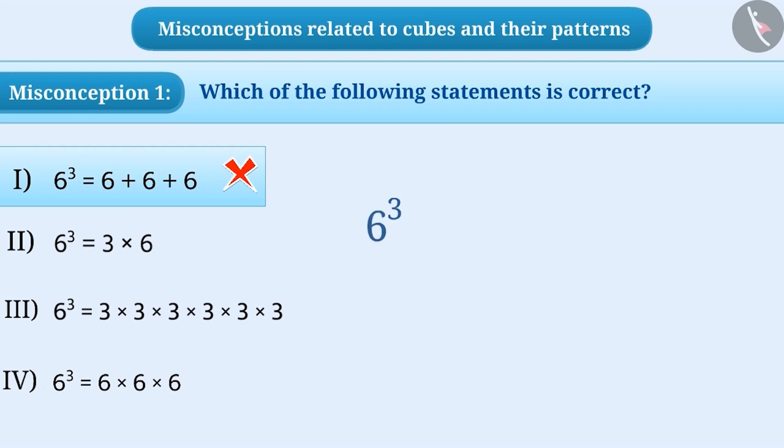Similarly, some children understand that the cube of a number means multiplying that number by three. Children with this misconception will choose option 2 as an answer which is also a wrong answer.